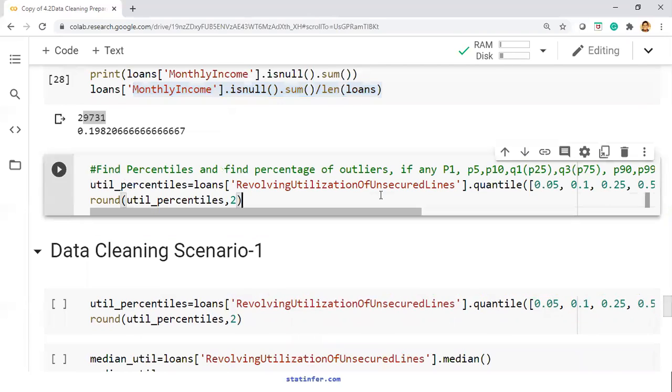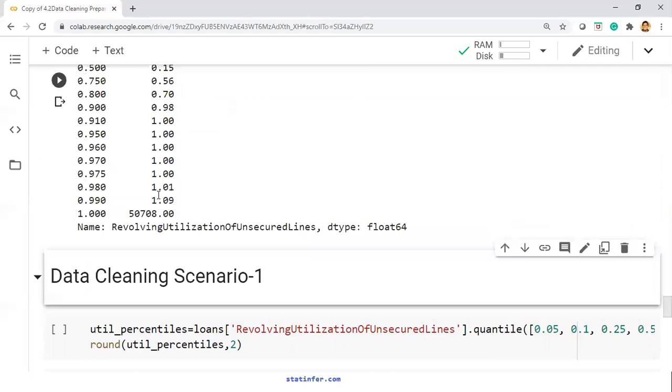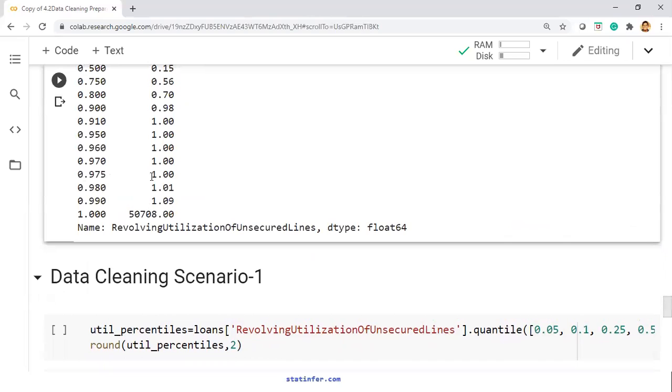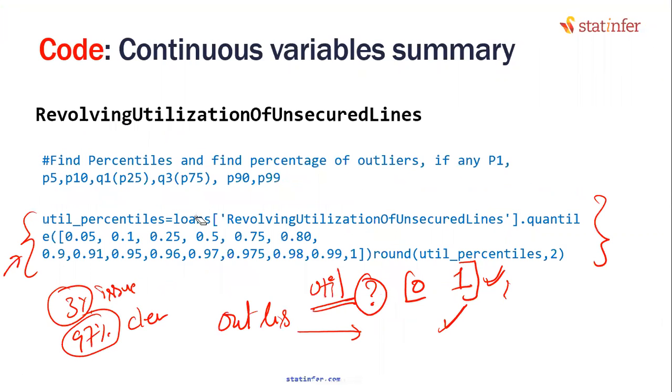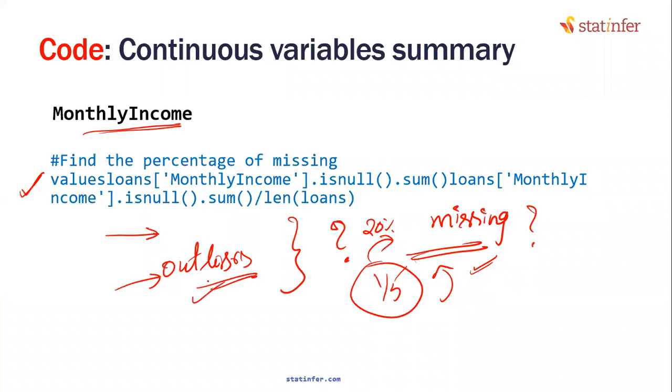Even utilization, we have already seen it. Utilization is what having the issues of two to three percent issues in utilization. That is the story till now. Continuous variables also have issues. Discrete variables also have issues. Any questions on this? Let's get an emoji.